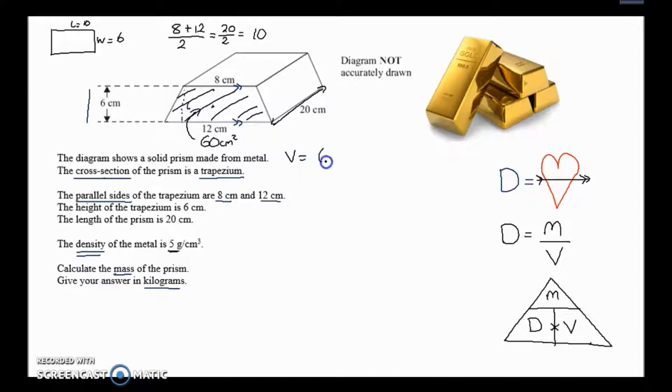Now you need to times it by the length to get the volume. So the volume equals 60 times the length which is 20. So the volume of our gold bar, the shape that we've got here, is 6 times 2 is 12 and then two zeros. You've got a calculator for these questions, so type that in, you get the volume.